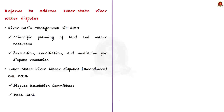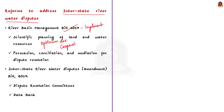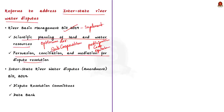Now let us see reforms and alternative steps. First, the River Basin Management Bill should be implemented. This bill aims at optimum development of interstate rivers by facilitating interstate cooperation using proper scientific planning of land and water resources. It works on the principles of participation, cooperation, and equitable and sustainable use of water. In case of any dispute between states, the bill proposes persuasion, conciliation and mediation for effective and fast dispute resolution.